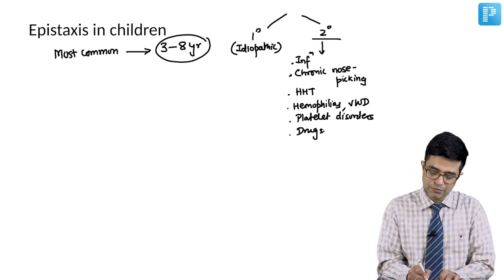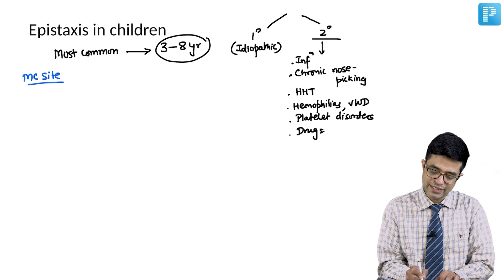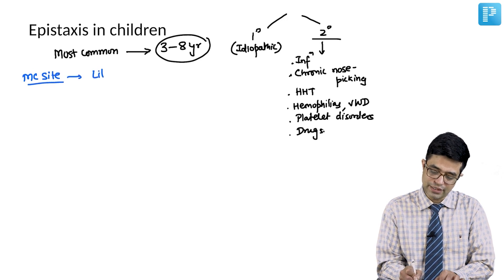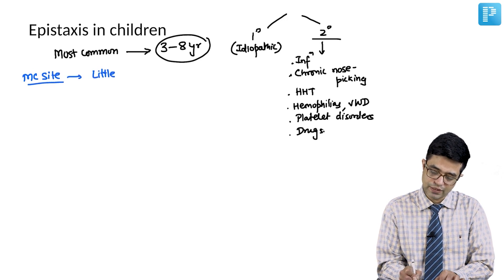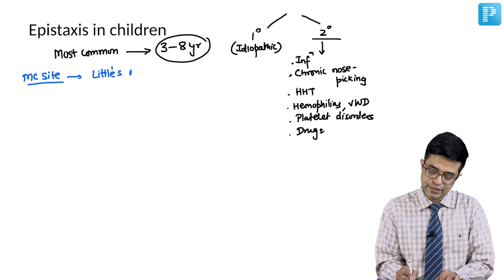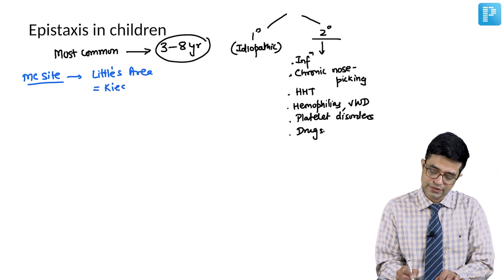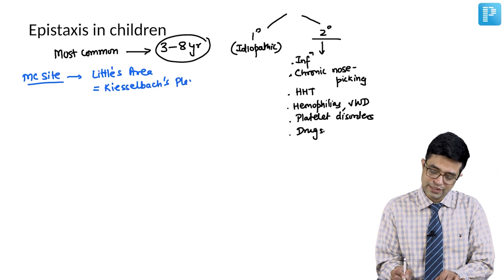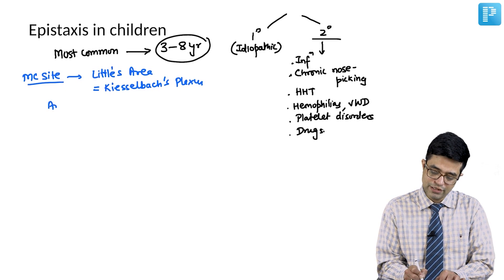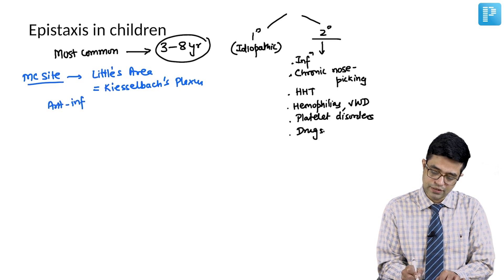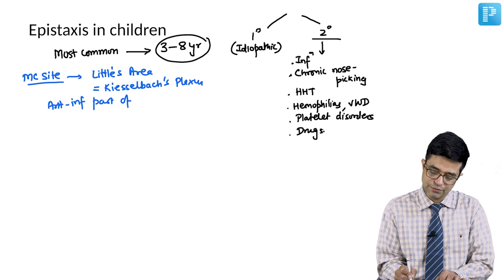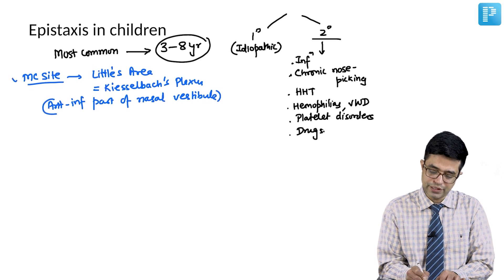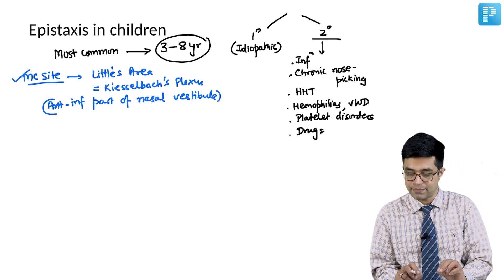Important point to remember: what is the most common site? The most common site is known as Little's area, also known as Kieselbach's plexus. It is present in the anteroinferior part of the nasal vestibule. This is the site from where more than 90% of cases the epistaxis happens.